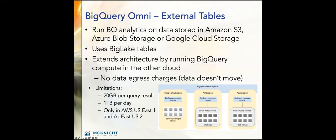To query external data, you need to create a BigLake table referencing Amazon S3 or blob storage data. The workflow involves creating an AWS IAM policy, an IAM role for BigQuery, adding a trust policy, creating a schema with the location specified as the other cloud region, creating that BigLake table, and then you can query as normal. There are some limitations: 20 GB per query result, one terabyte per day, and only a couple of regions in AWS and Azure where this is working today. This is bound to change.